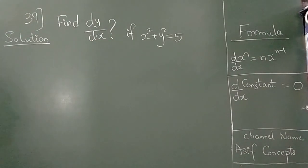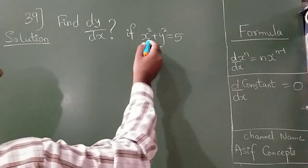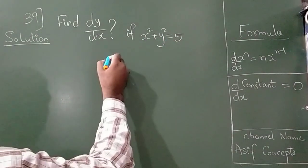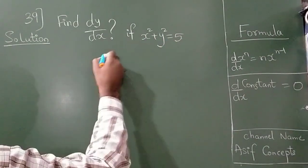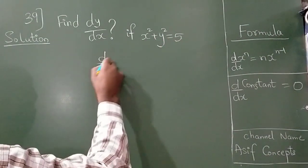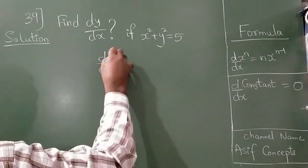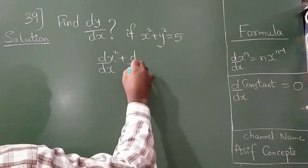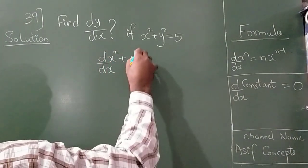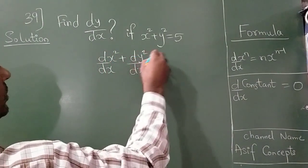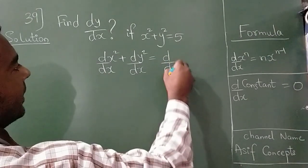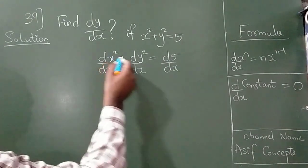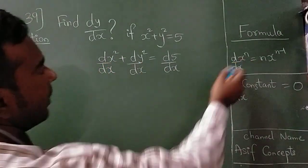Find dy/dx if x² + y² = 5. This can be written as d/dx of x² plus d/dx of y² is equal to d/dx of 5. So from this formula,